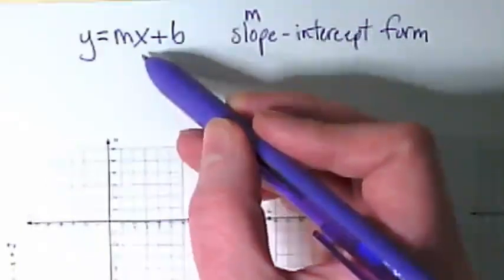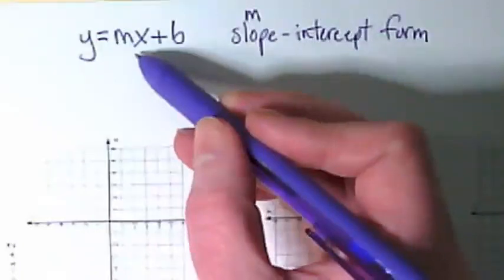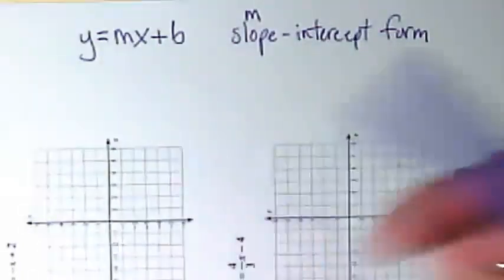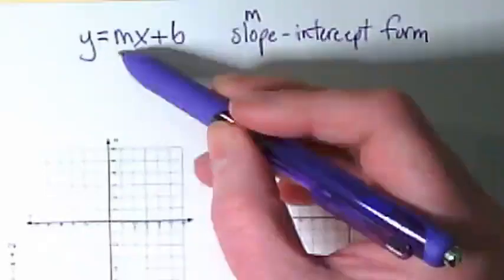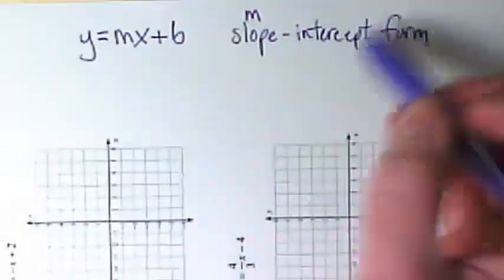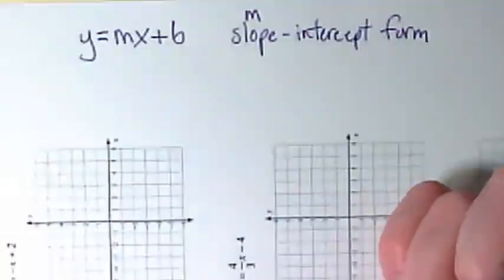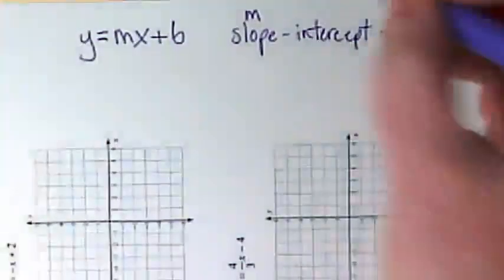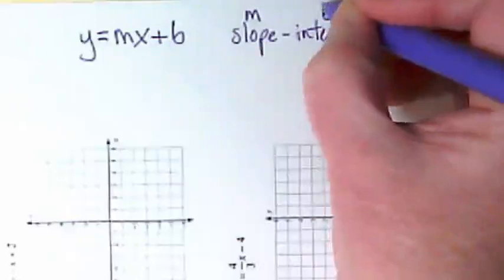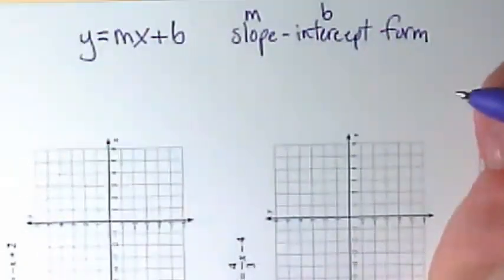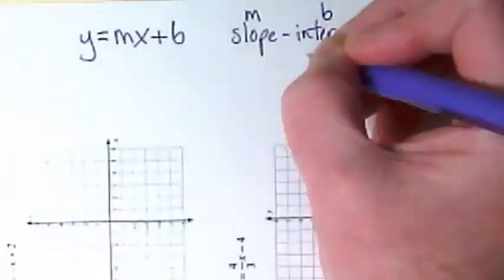It's also named slope-intercept form because there's two variables in it that it gets its name from. M in the equation is the slope part. Where do you see the intercept in this equation? It's the B. And it's not just any intercept, it is the y-intercept.